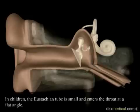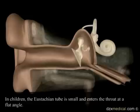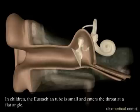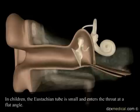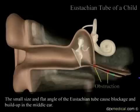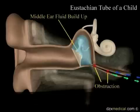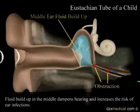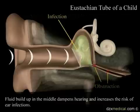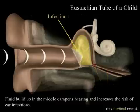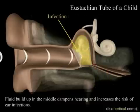In children, the eustachian tube is small and enters the throat at a flat angle. The small size and flat angle of the eustachian tube cause blockage and buildup in the middle ear. Fluid buildup in the middle ear dampens hearing and increases the risk of ear infections.